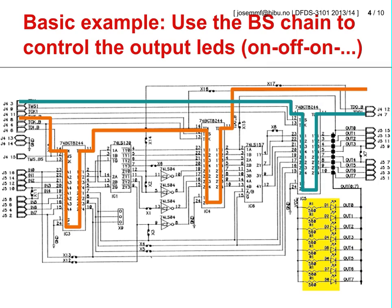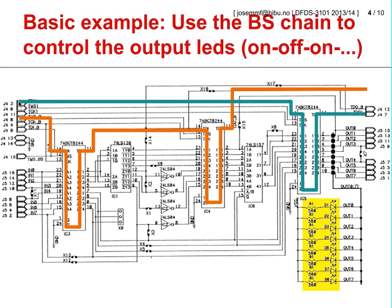The best way to illustrate this test workflow is to consider a practical example. In the following slides we look at the possibility of writing a test program for controlling the LEDs present in our demonstration board. Our demonstration board comprises two boundary scan chains, and the LEDs are connected to the outputs of the device located in the second boundary scan chain. We assume that the appropriate physical connections will have been established so that the test program executes in the boundary scan chain that controls the LEDs.